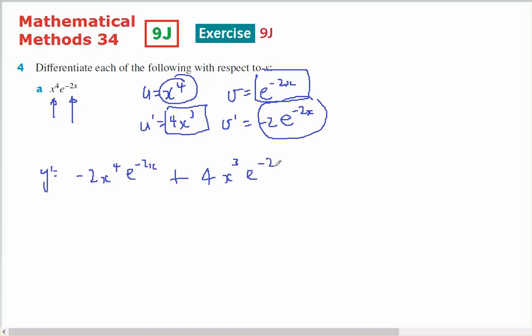I can simplify by taking out common factors. I can take out a 2, I can take out x to the power of 3, and I can take out e to the minus 2x, because they're all common.